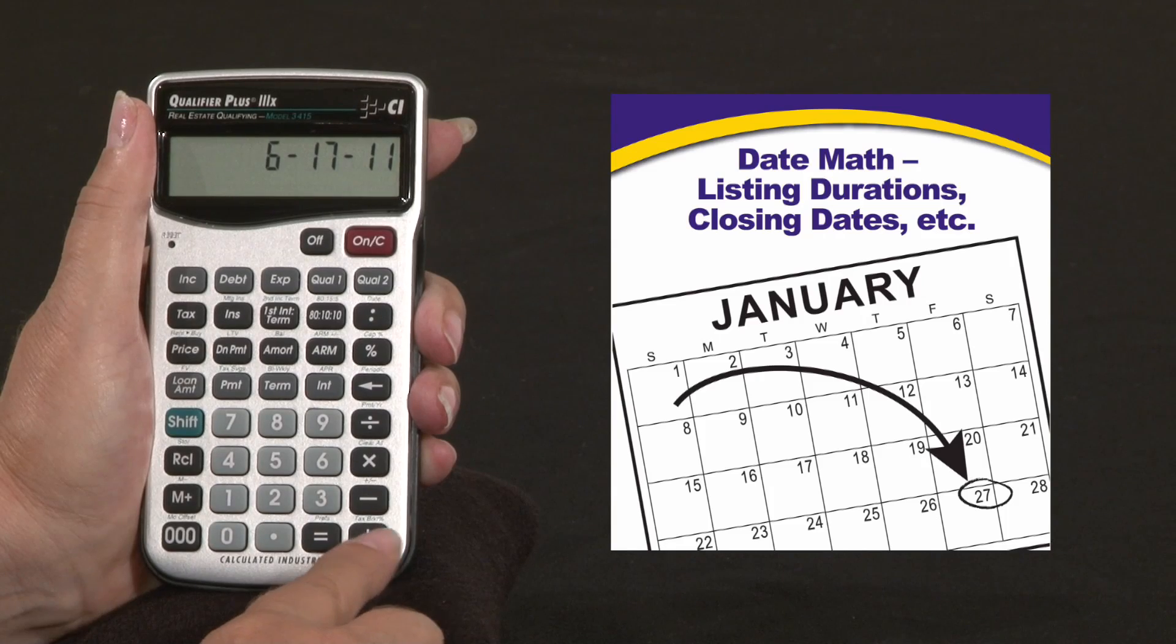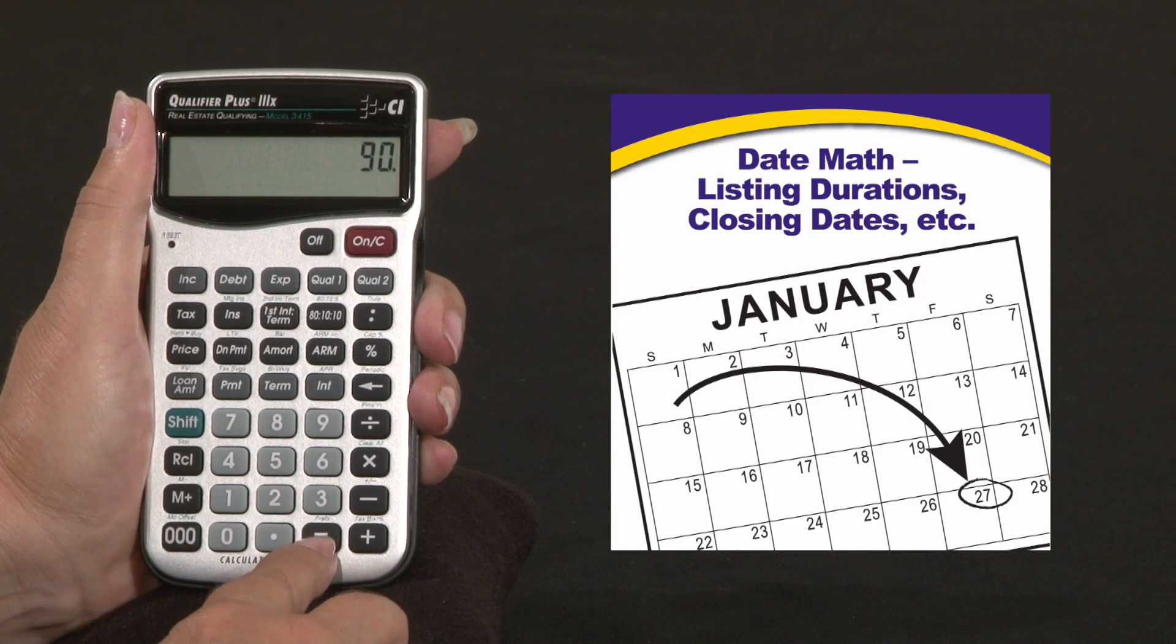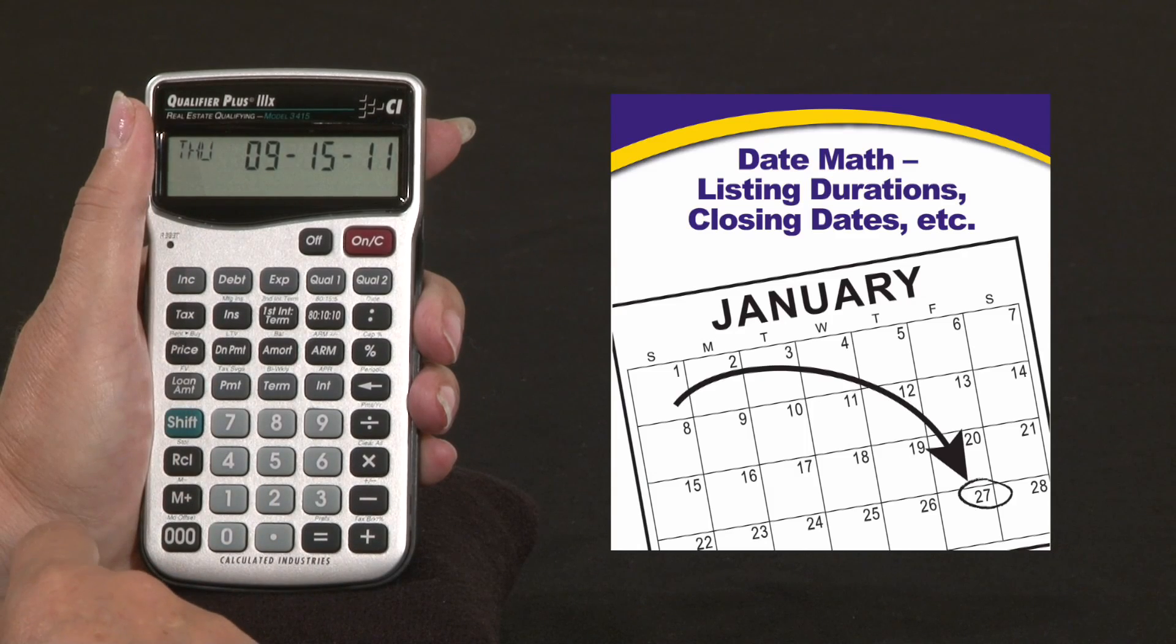Now we can add 90 days to it. We're going to go plus 90 equals and that's September 15, 2011, your closing date.